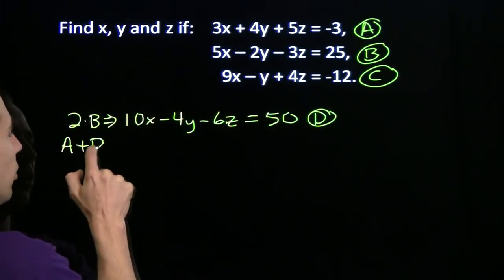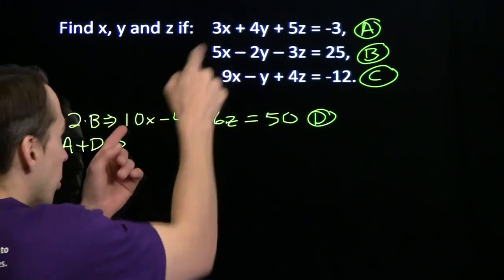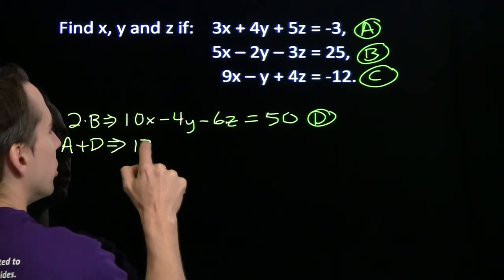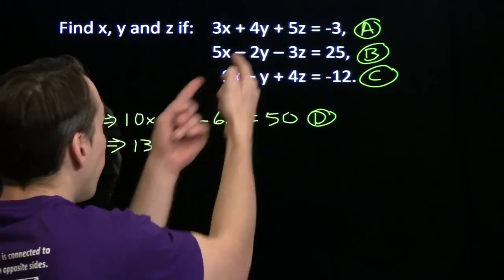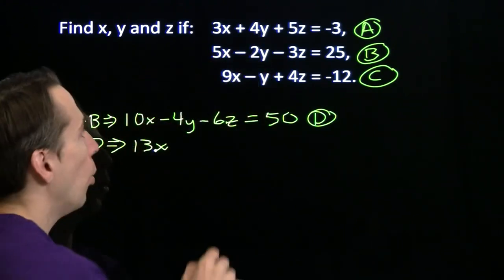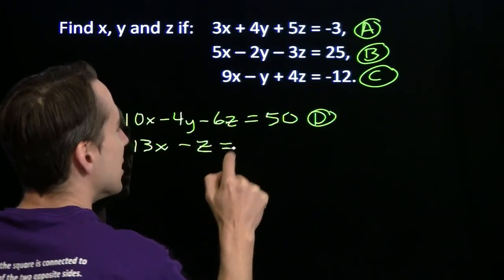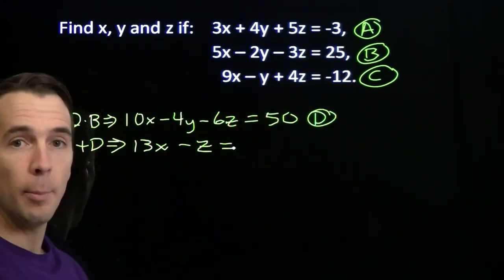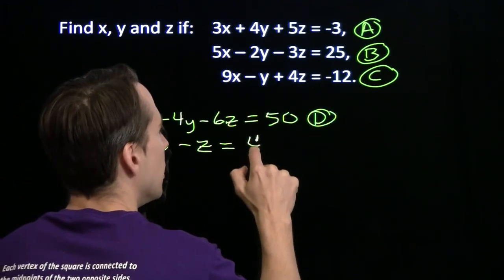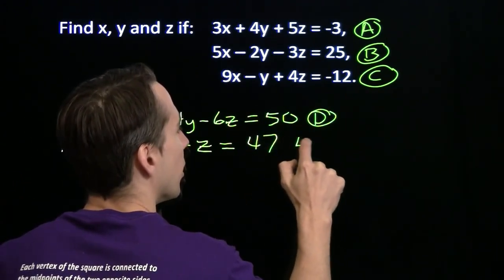Now we can add this equation to equation A, and that will eliminate y. I'm going to letter this equation D as well. Equation A plus equation D: 3x plus 10x is 13x. 4y minus 4y, no more y's. 5z minus 6z gives us minus z. Minus 3 plus 50 is 47. We'll call that equation E.